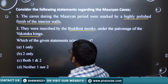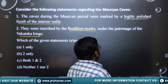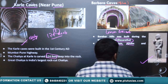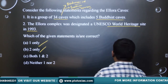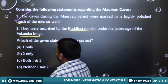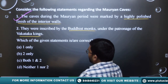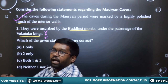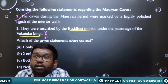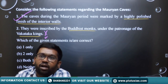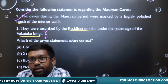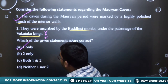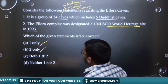Question two: Statement one — the caves during the Mauryan period were marked by highly polished finish of interior walls — this is TRUE, as Barabar caves is the example. Statement two — they were inscribed by Buddhist monks under the patronage of Vakataka kings — this is FALSE, because the Vakataka kings ruled in the 3rd–5th century AD, a different time from the Mauryas. So the answer is only statement one.